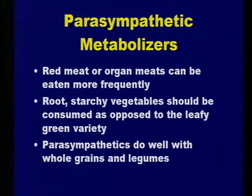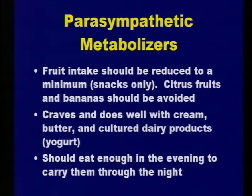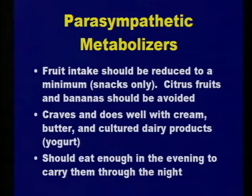Parasympathetics do well with whole sprouted grains and legumes—slow cooked on the legumes is better. Fruit for parasympathetic metabolizers should be reduced to snacks only, because their blood sugars bottom out quickly—they burn sugar rapidly. They should not sit down with a huge fruit plate in the morning because in an hour or two their blood sugar will just bottom out. Protein is a better choice because parasympathetics are catabolic—they break food down faster and burn it up faster. The sympathetic might do well with a fruit plate, while the heavy protein would just sit on a sympathetic's stomach and not break down well.